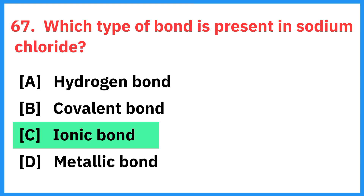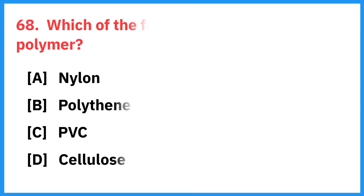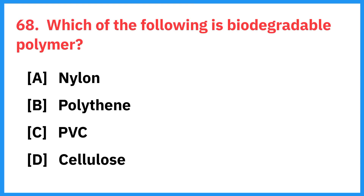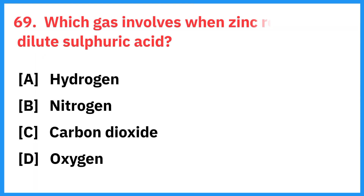Which type of bond is present in sodium chloride? Correct answer is ionic bond. Which of the following is a biodegradable polymer? Correct answer is cellulose.